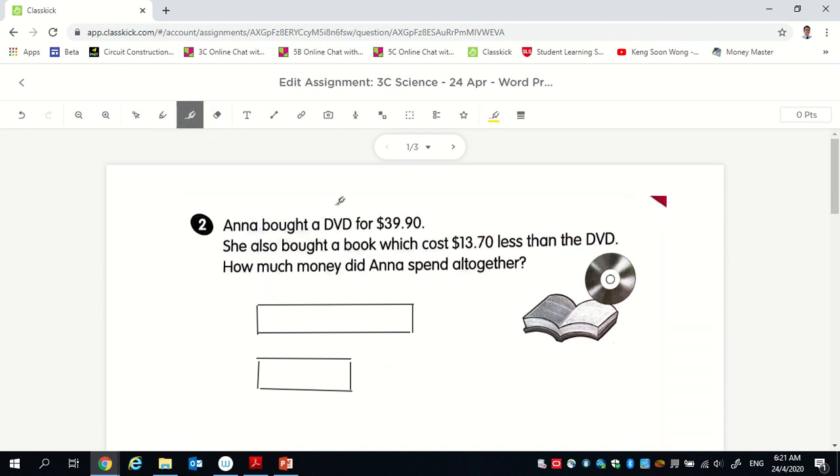Same thing with RICE method. Anna bought a DVD for $39.90. She also bought a book which cost $13.70 less than the DVD. So this is a DVD and then I bought a book too. A book cost $13.70 less than the DVD. So every time again you have less than, more than, tell me who is more, who is less.